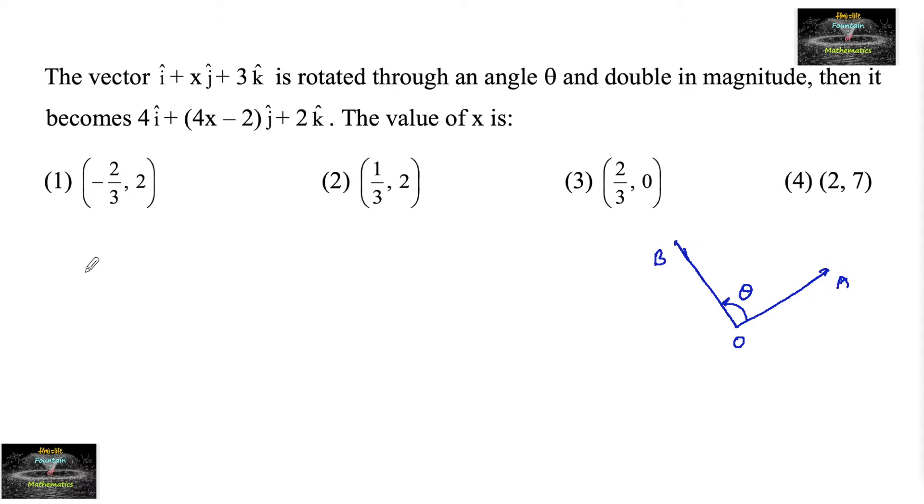So that means 2 times mod of OA is equal to mod of vector OB. That is 2 times mod of i plus xj plus 3k is equal to mod of 4i plus 4x minus 2 of j plus 2k.